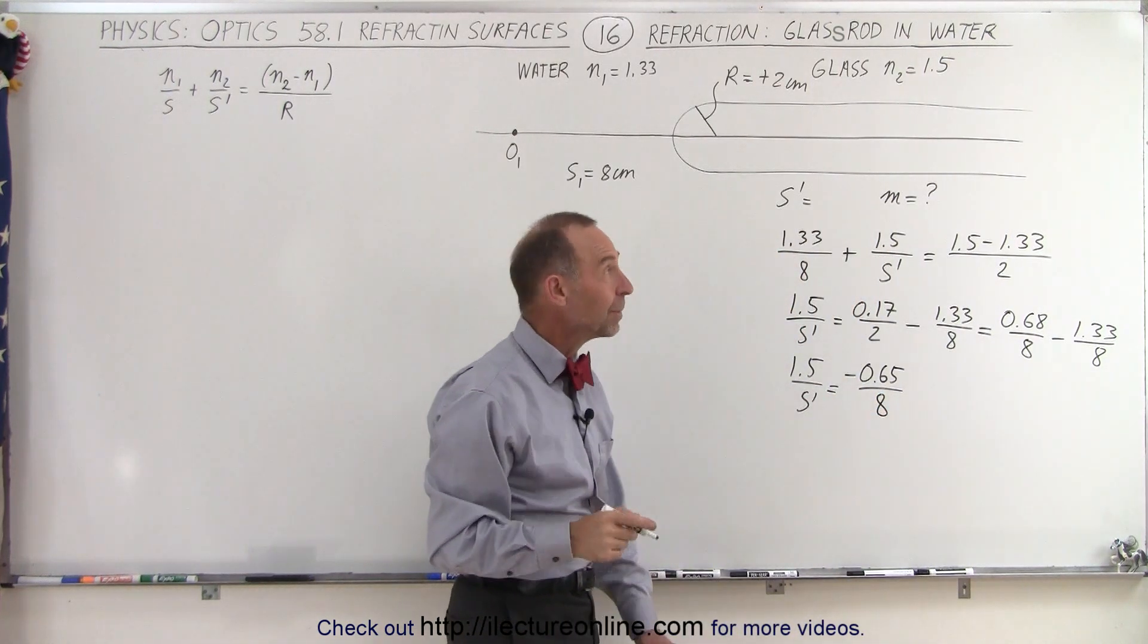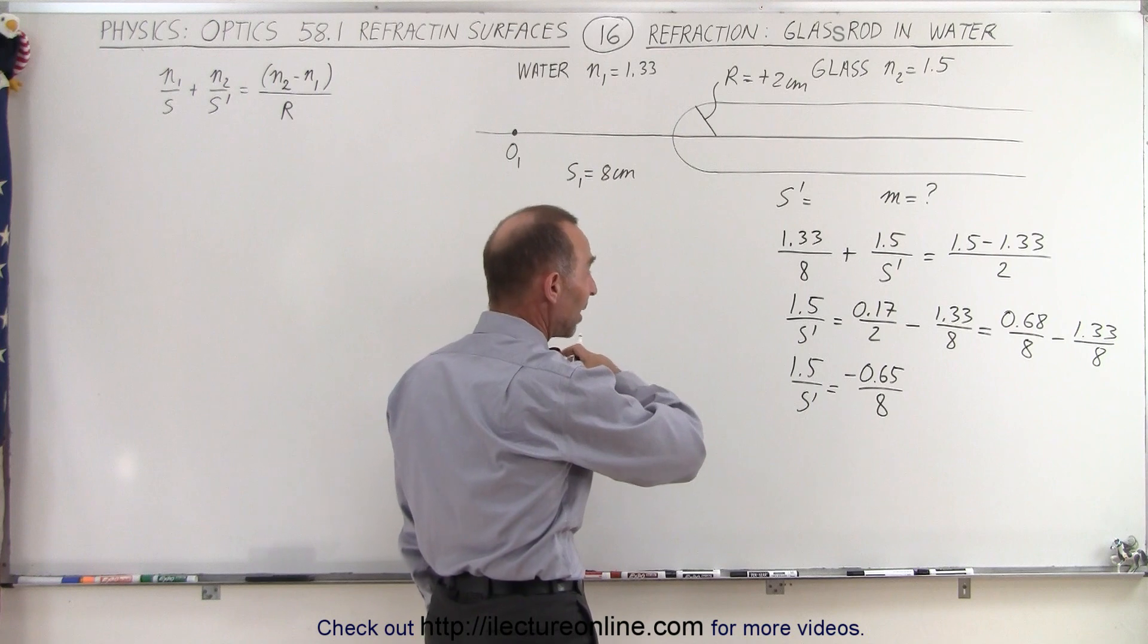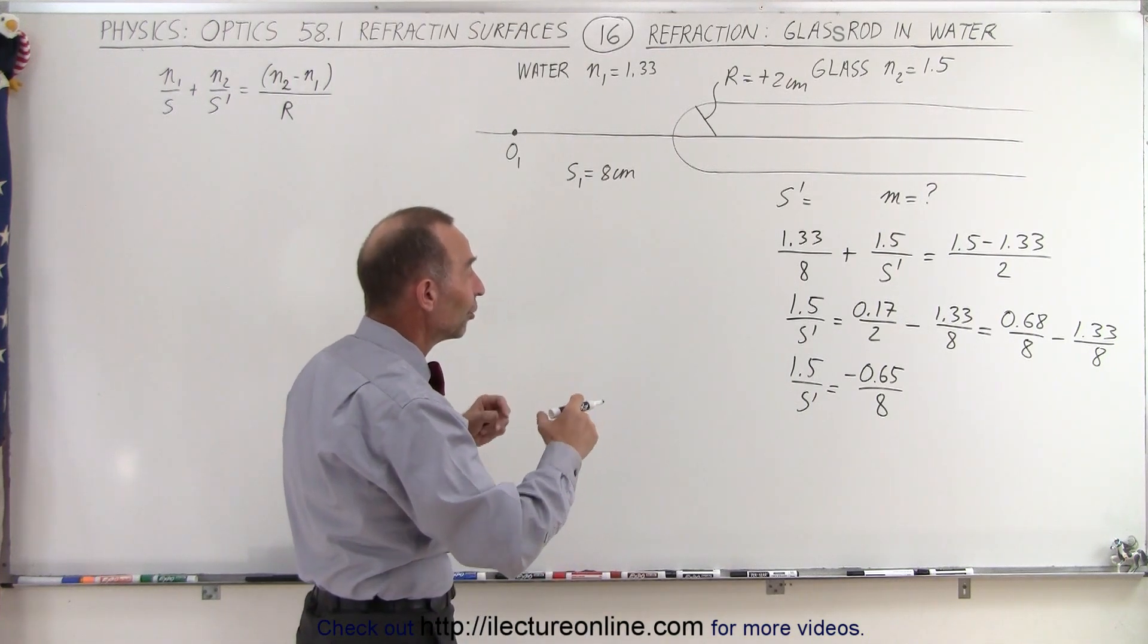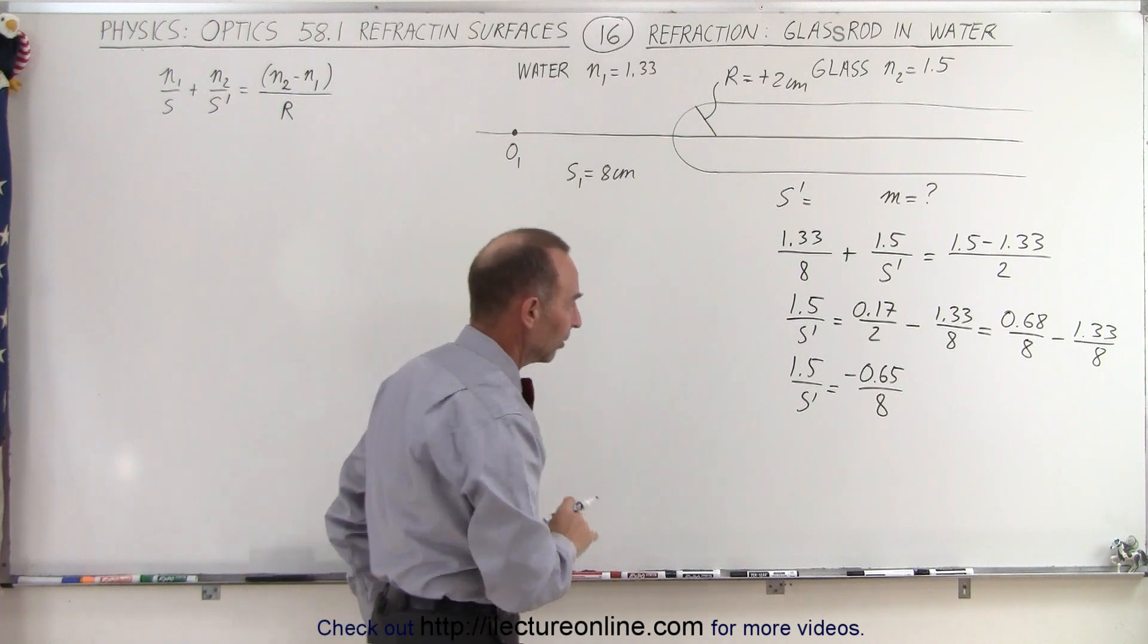Negative, well that means it's going to be on the same side as the object, which is very different from what we saw when the rod was placed in air, so it does make a difference. Well let's continue here.